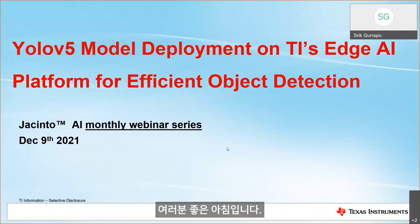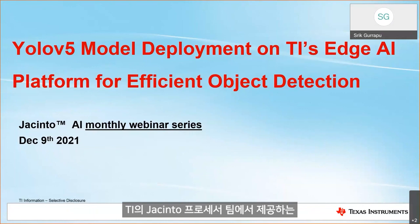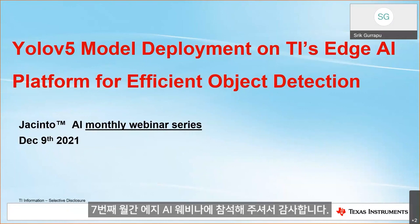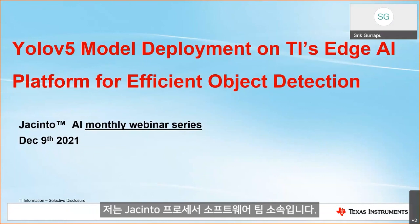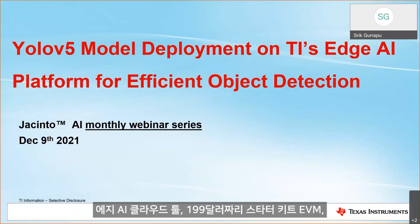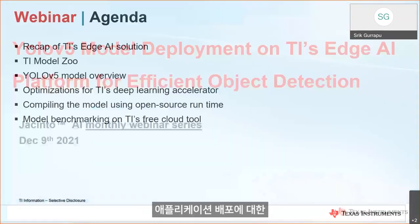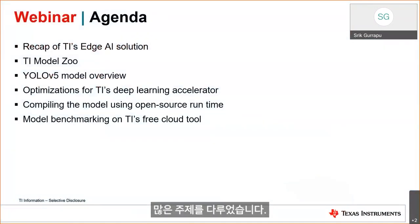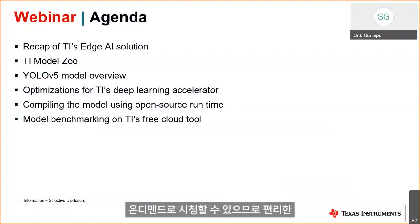Good morning, good evening depending on your time zone. Thank you for joining our seventh monthly HJI webinar brought to you by TI's Jacinto processors team. My name is Shriek Gurapu, I'm on the Jacinto processors software team. So far in these monthly webinars we have covered quite a bit of topics on our edge AI cloud tool, our $199 starter kit, EVM, deploying applications from simple hello world to people counting, AI box, machine vision, and industrial app inspection. If you missed any of these past webinars, they are available on demand on our training portal.